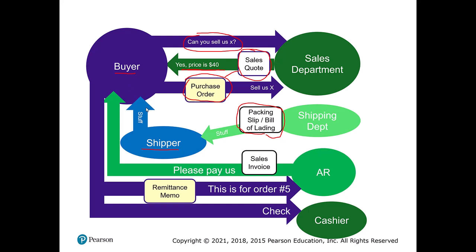The buyer is going to tie our packing slip or bill of lading into their purchase order and into the sales quote. Once this has been done, our AR — accounts receivable — department is going to send a sales invoice, basically saying we would like you to pay for what we sent you. This is a separate step from shipping because items are probably delivered to a warehouse, not the accounting department. We also want separation of concerns — warehouse people don't need to know the cost, which might be proprietary.